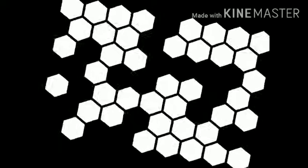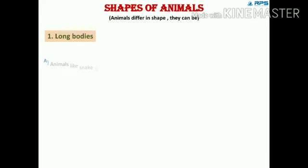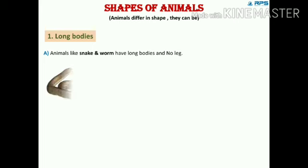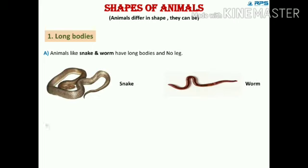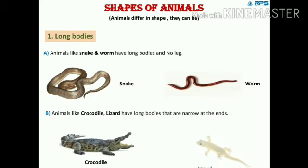Animals differ in shape. Some animals have long bodies, like snakes and worms. Crocodiles and lizards also have long bodies, but they have four short limbs that help them to crawl.